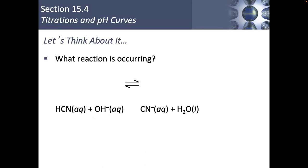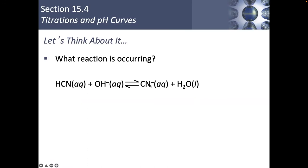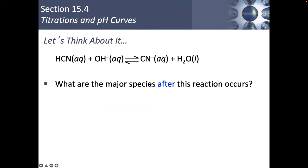What reaction would occur when we mixed those two things together? If we're looking at acid-base reactions, we can identify that the strongest acid of our choices is HCN, even though it's a weak acid. And OH⁻ will be our base because it is the strongest base available. When we mix them together, we'd be making water and cyanide ions as a byproduct.